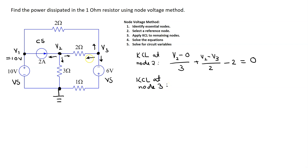Looking at KCL at node 3, the branch current through the two ohm resistor follows the assumed branch current direction, so this is V3 minus V1 over 2.